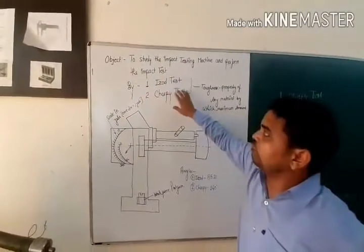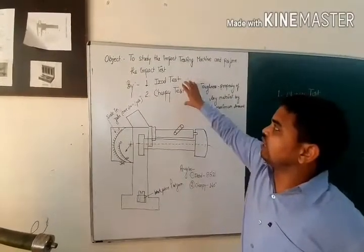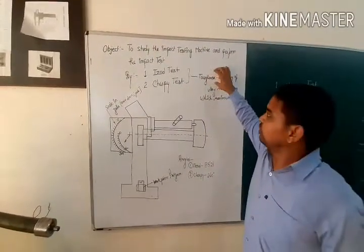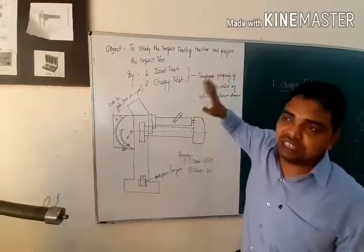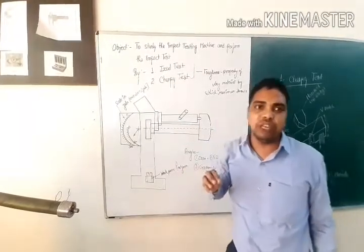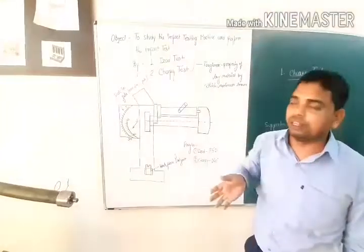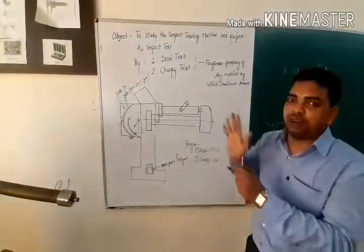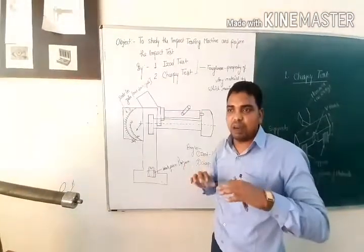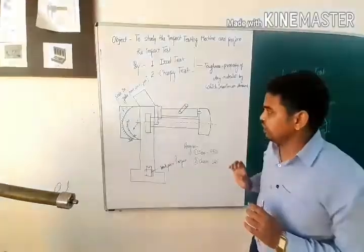The aim is to study the impact testing machine and perform the impact test using the Izod test and Charpy test. When we perform the test, we have to find out the toughness value of any material. Toughness is the maximum amount of energy which can be stored in a material under the impact of loading.